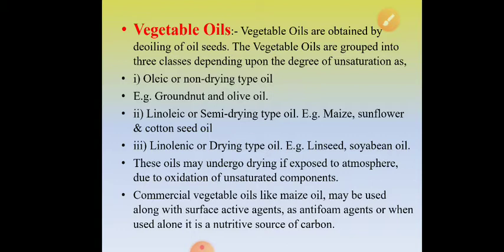Vegetable oils are obtained by de-oiling of oil seeds — oil is extracted and that oil is called vegetable oil. Vegetable oils are grouped into three categories depending upon their degree of unsaturation: number one, oleic acid or non-drying type; number two, linoleic or semi-drying type; and number three, linolenic or drying type.